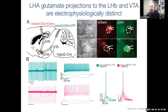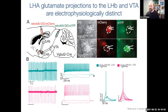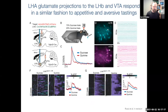Moving on from the molecular data, Mark also did a detailed characterization of the electrophysiological properties of the habenula- or VTA-projecting glutamatergic neurons. Under many different electrophysiological assays, the two populations were distinct from one another. One example: the habenula-projecting cells show a higher spontaneous and evoked firing rate compared to the VTA-projecting cells.